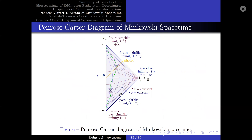Now, let us draw the Penrose-Carter diagram for the Minkowski metric. Recall that the absolute value of capital T plus capital R is less than π — thus, this corresponds to this line. Moreover, the absolute value of capital T minus capital R is less than π, which corresponds to this line. And finally, capital R is greater than zero, so we eliminate anything in that region. Thus, the remaining portion satisfies the aforementioned inequalities.